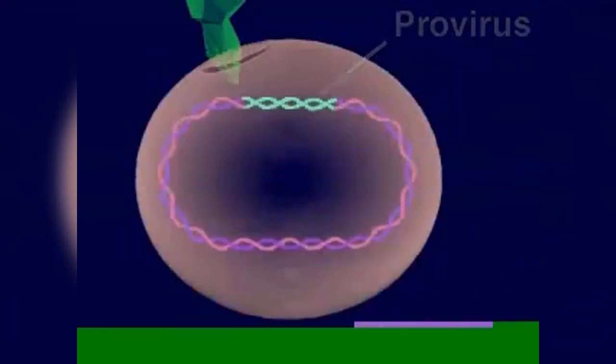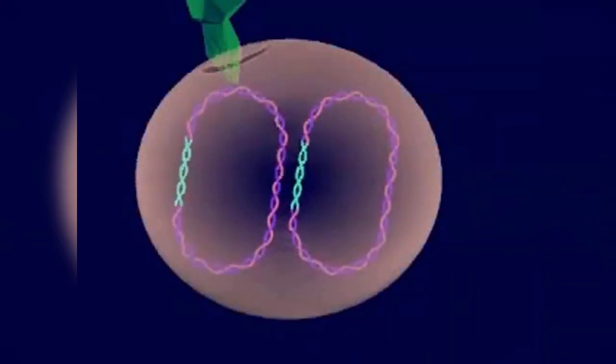During cell reproduction, the host cell copies the provirus genes along with its own DNA. The provirus is inactive at this time.